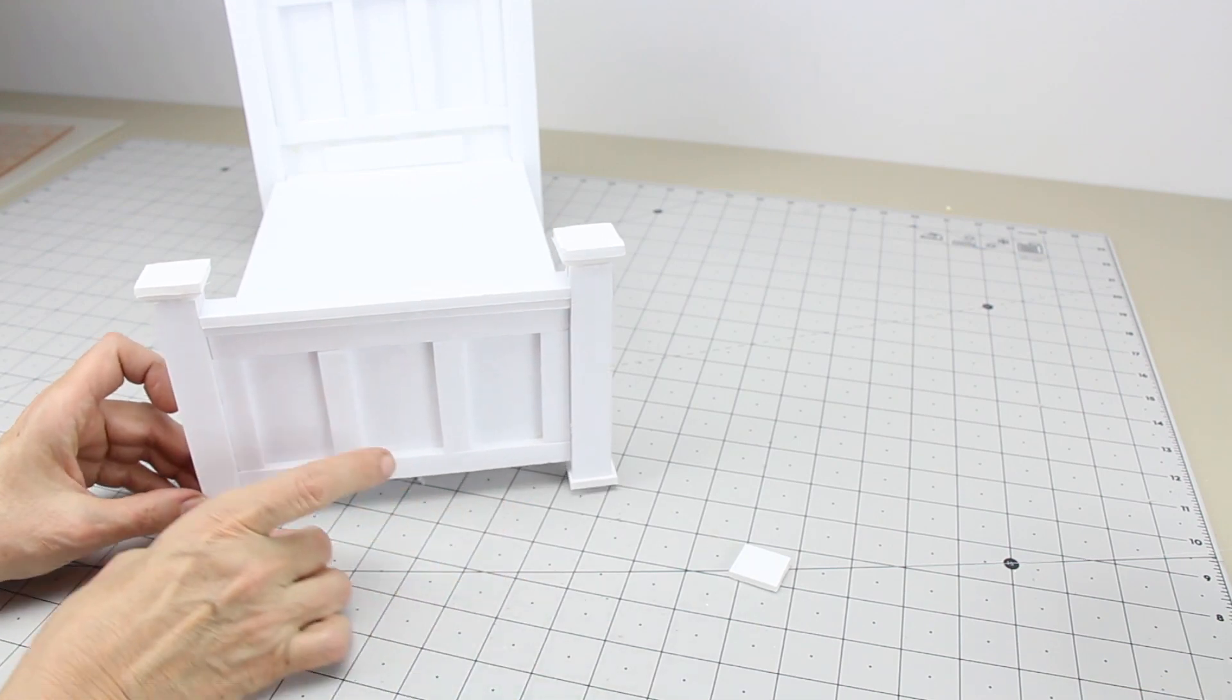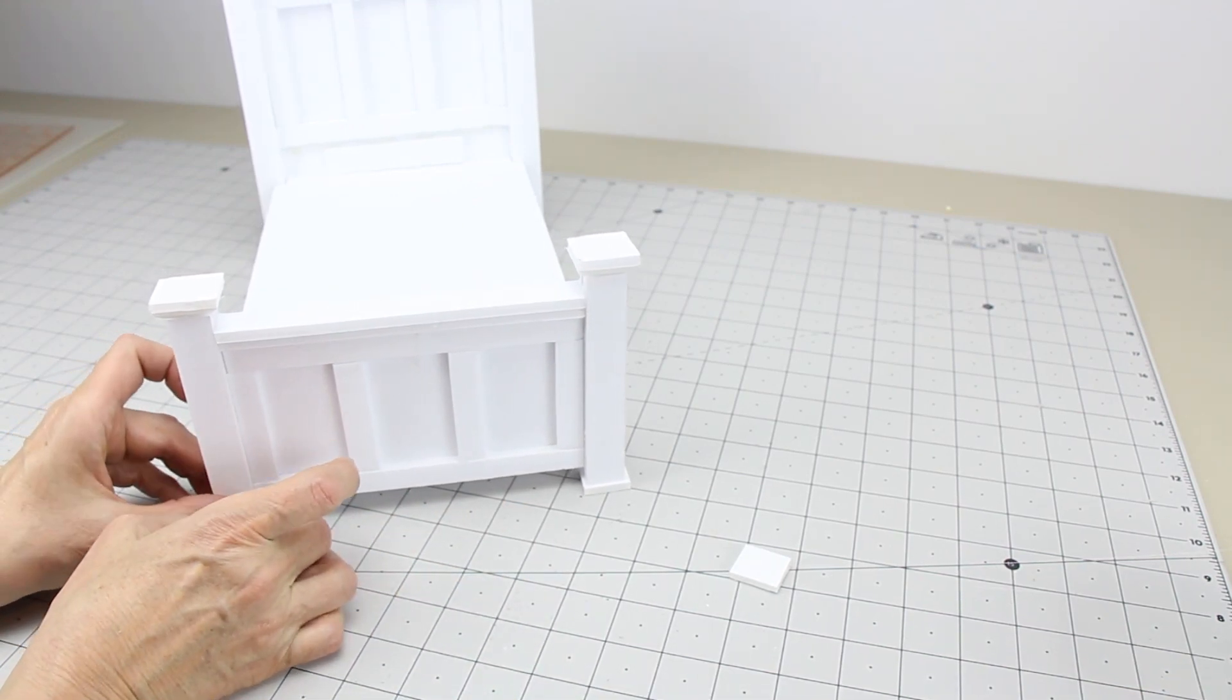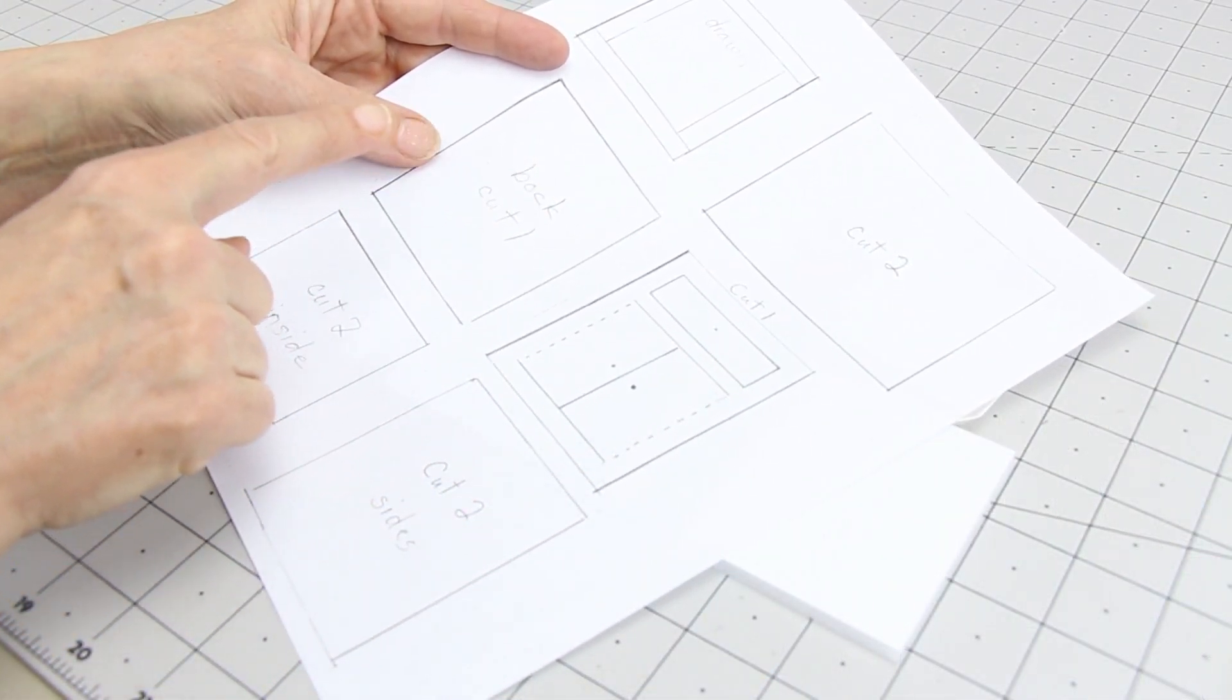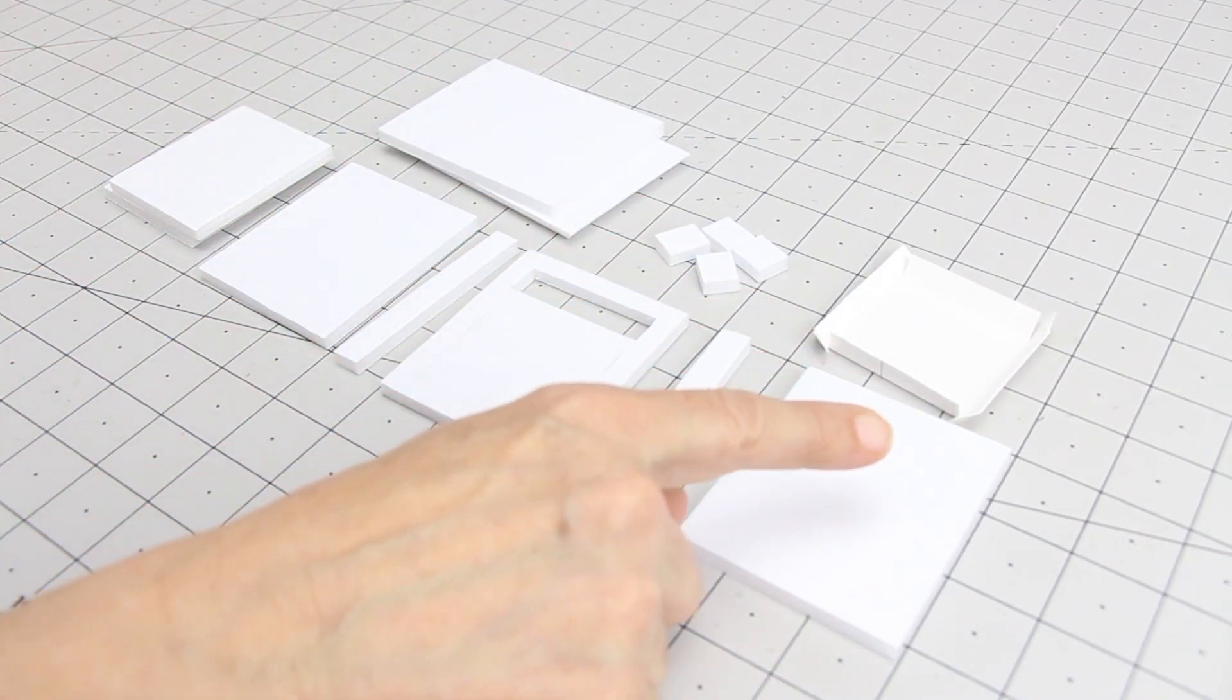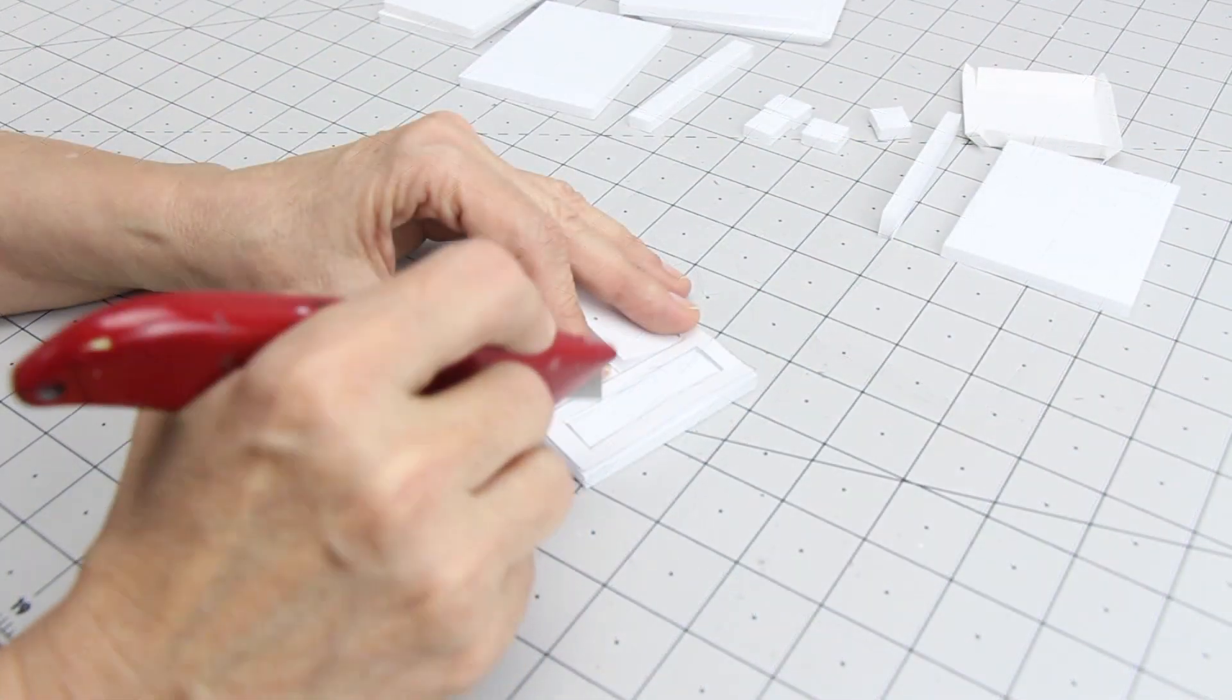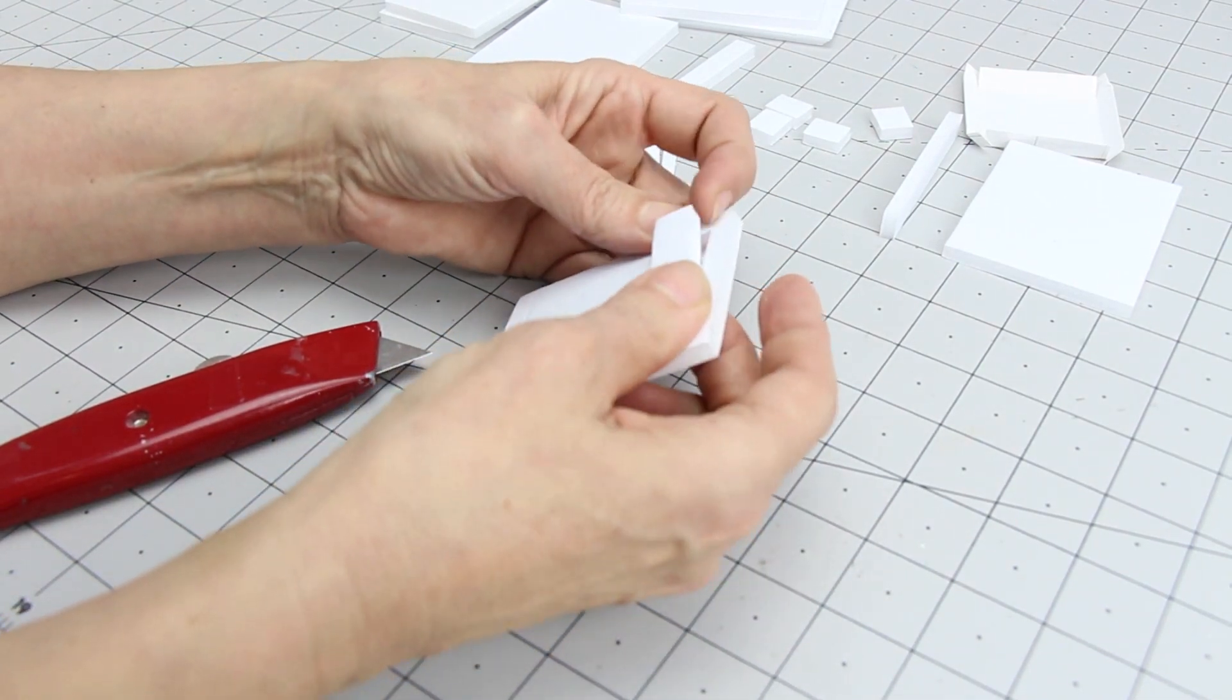Now take your four small squares and glue them on for feet. To make the bed stand, use the pattern below. Cut all the pieces out of the foam core board except the drawer. That needs to be cut out of the tag board. Take the front piece and place your pattern over it and cut out the drawer.